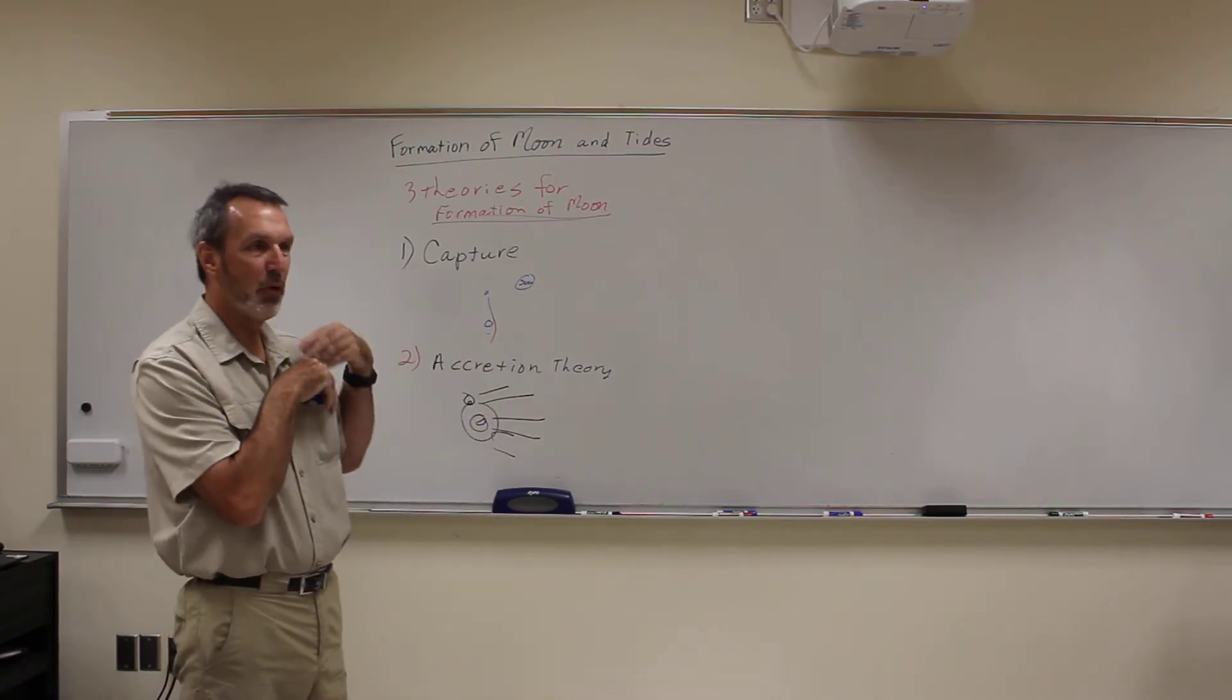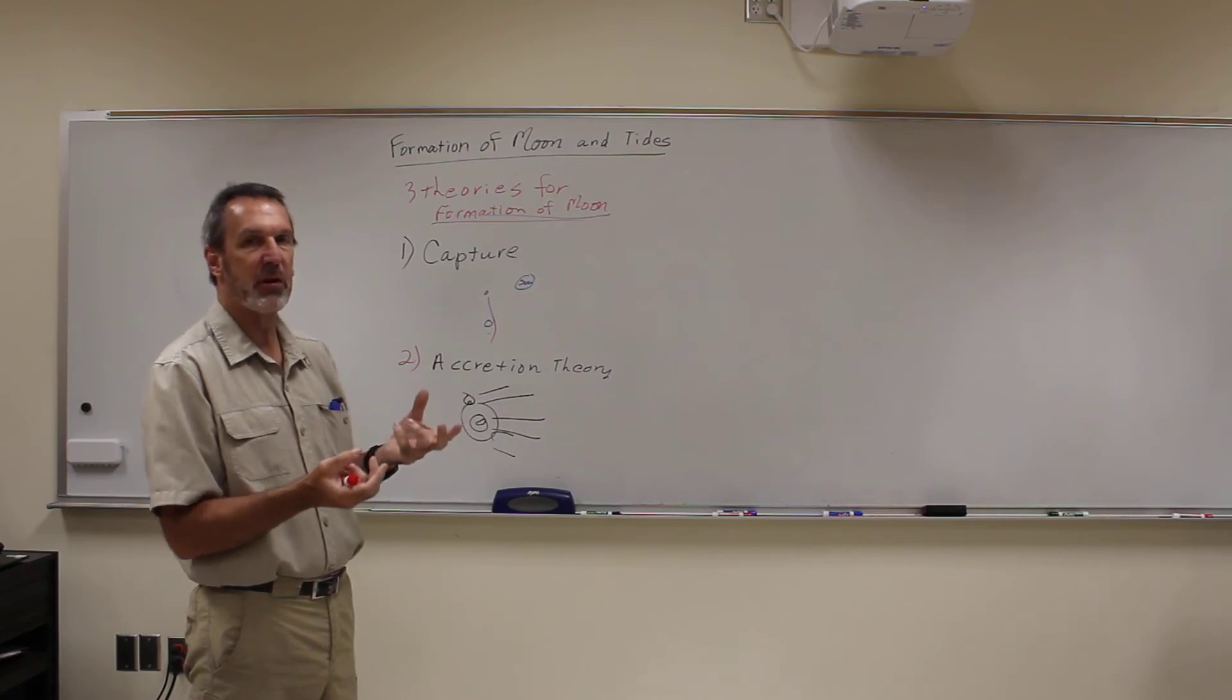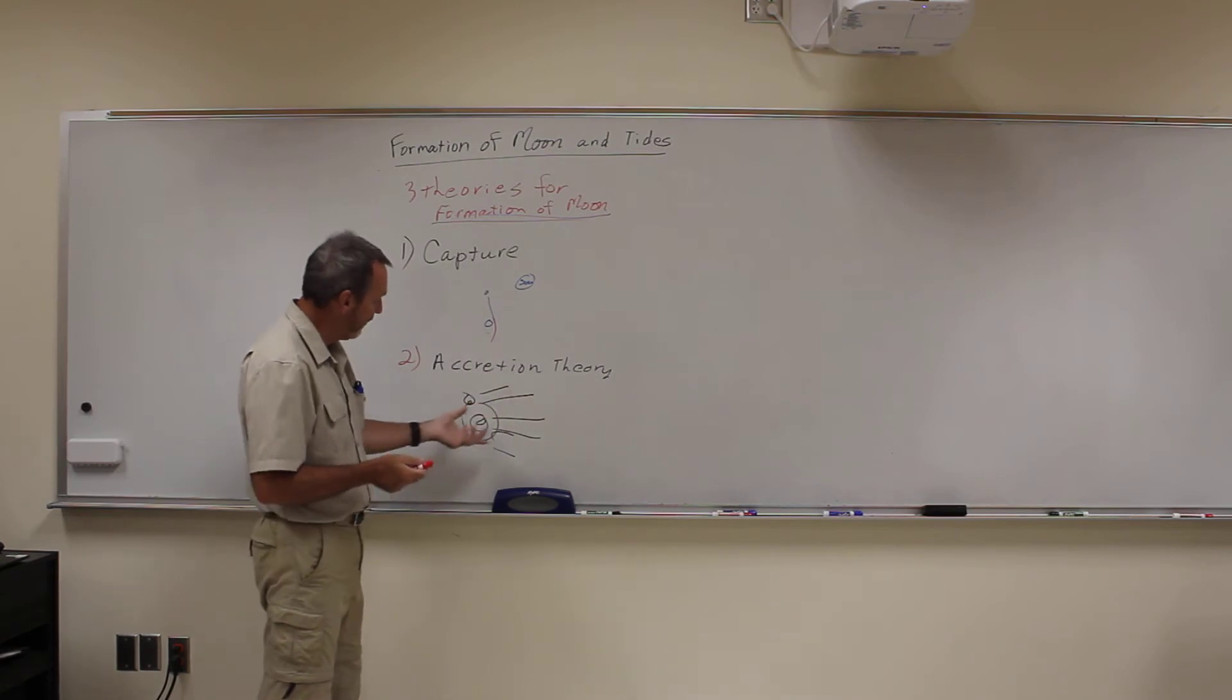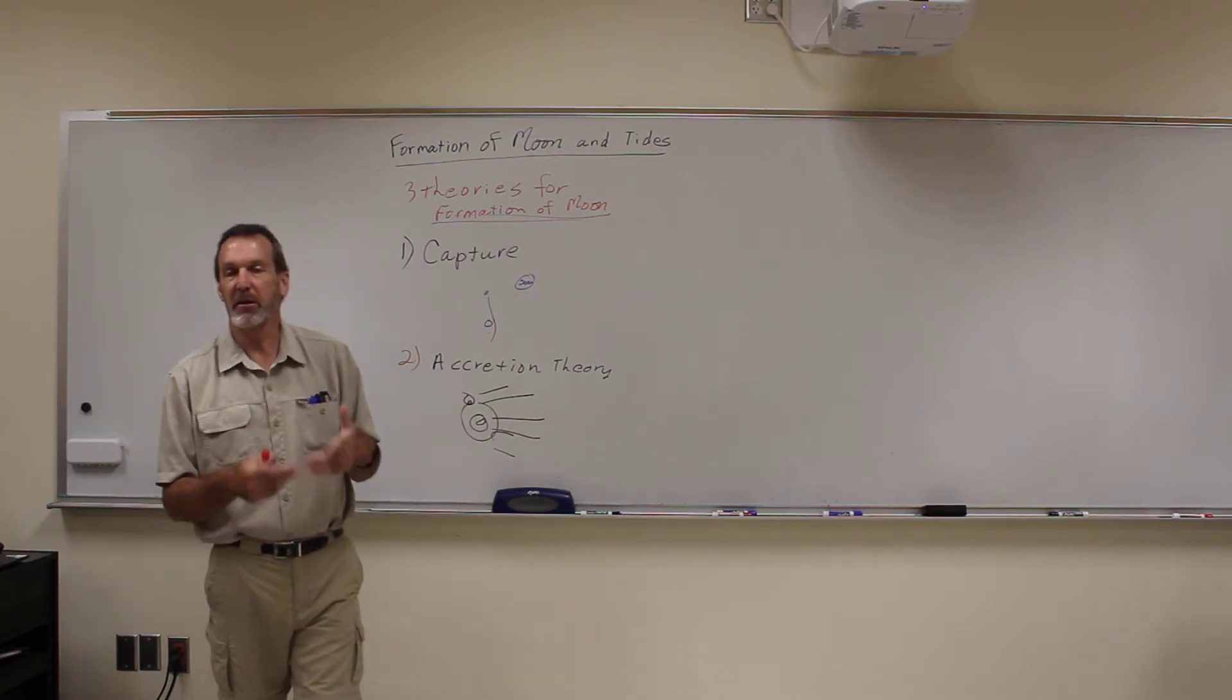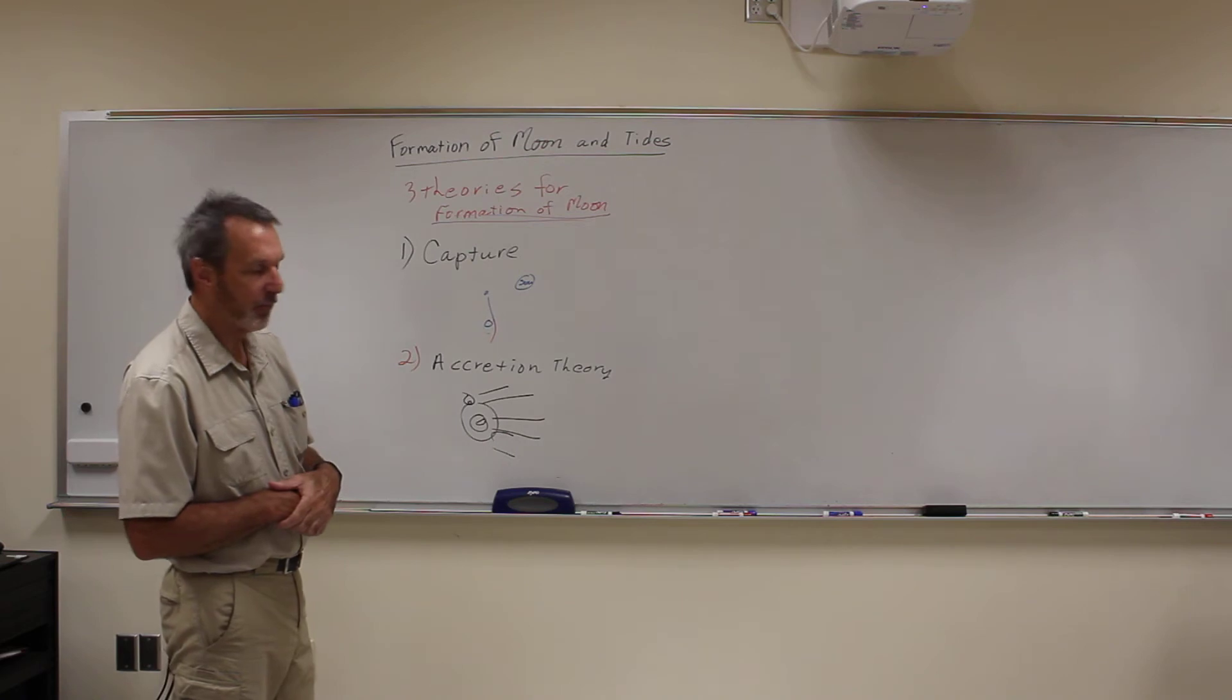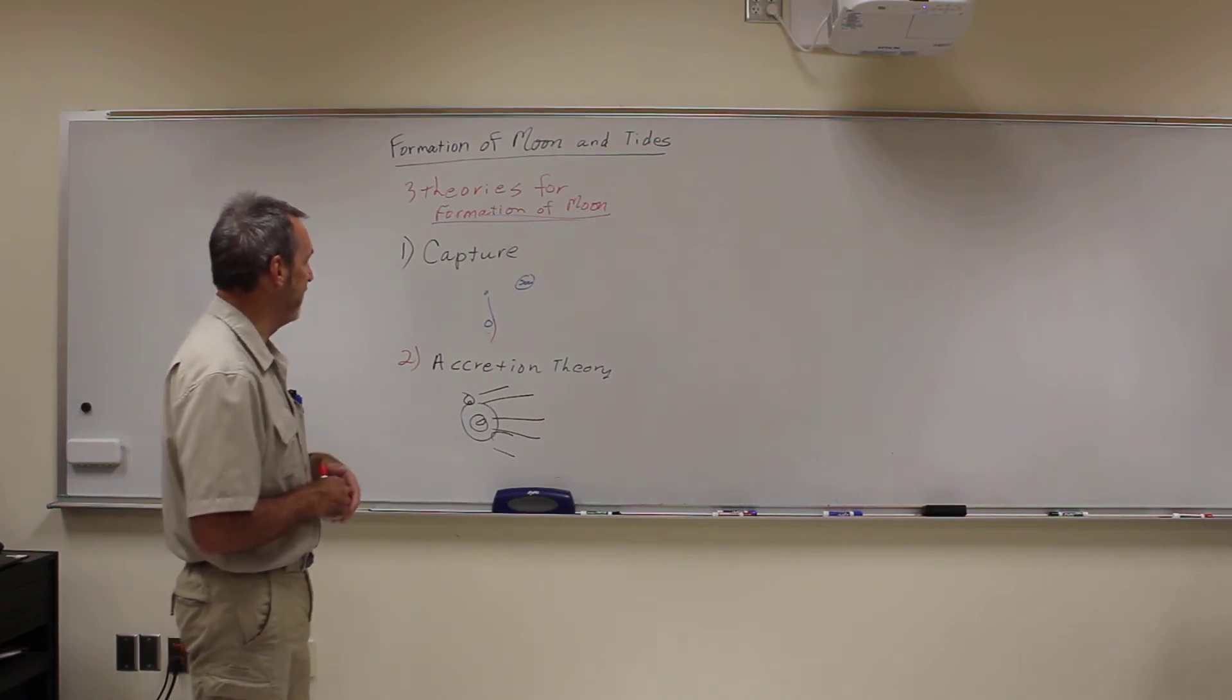So essentially they formed as a planet-moon system as small chunks of rocks already orbiting each other. If that was the case, since they're grabbing all the same amount of material, then the moon's density should be much closer to the earth's density because they've got the same amount of iron and nickel and all that. But we see this significant difference between them, so we don't think the accretion theory is as likely.